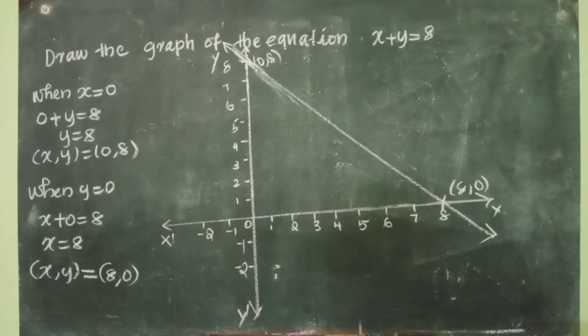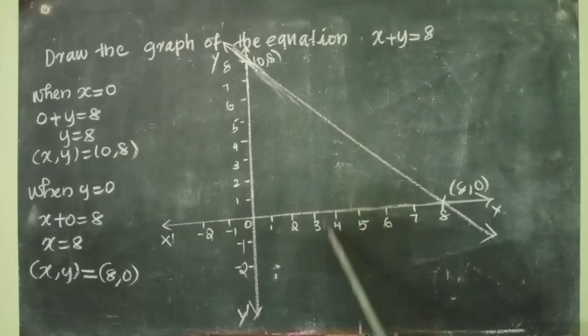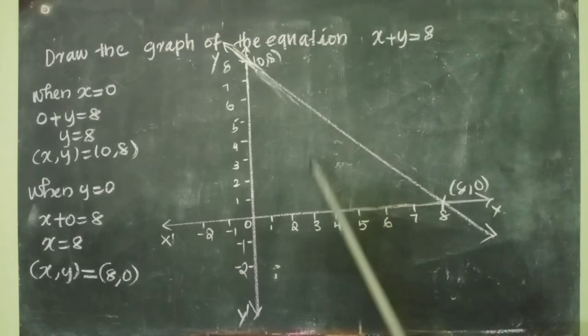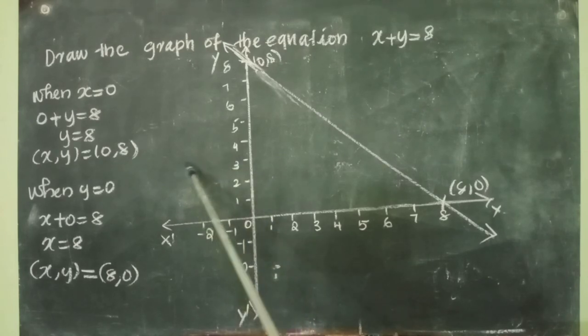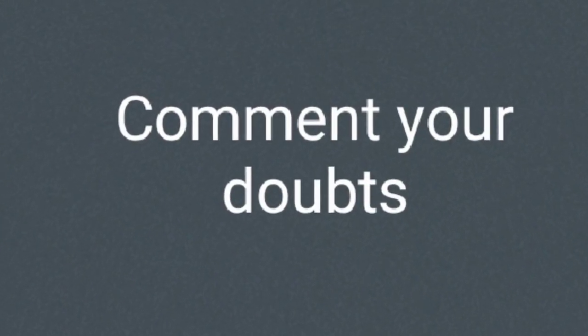Almost all questions in this video have been discussed, except equations in one variable — that is very easy. For the graph of x equal to 3, draw a line through x equal to 3 parallel to the y-axis. If the question is y equal to 3, draw through that point parallel to the x-axis. Study well and score good marks. I hope you understood the topic — if you have any doubt, please comment. Thank you.